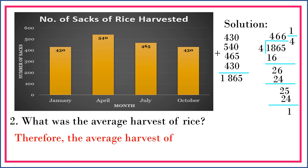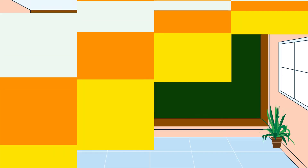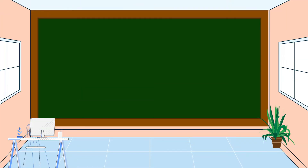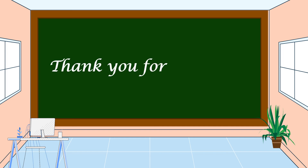Therefore, the average harvest of rice is 466 and 1/4 sacks. I hope that you understand our lesson for today, and thank you for watching.